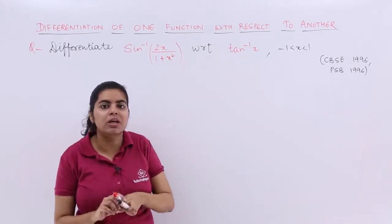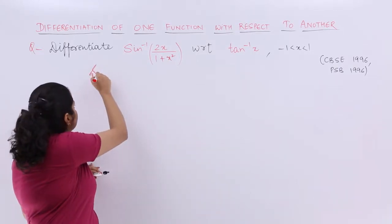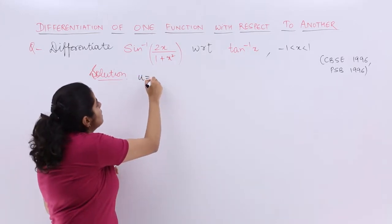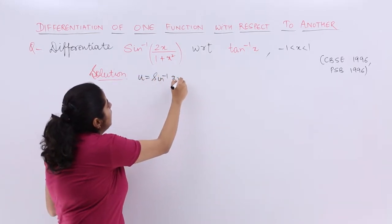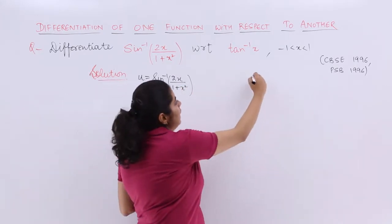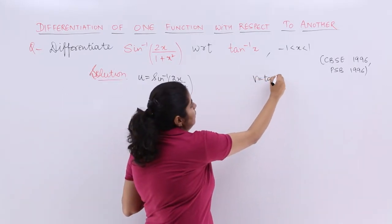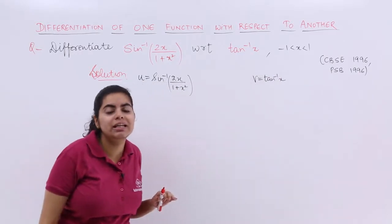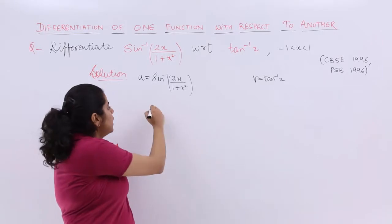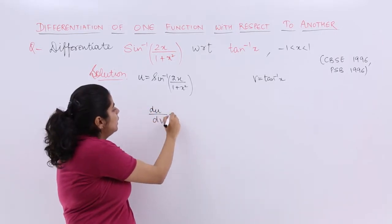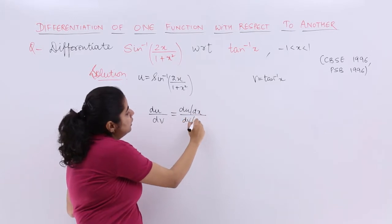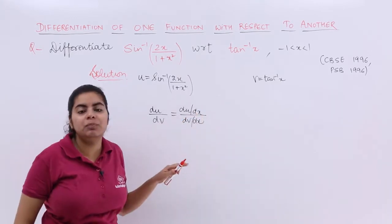Let's start the solution. So if my u is sin inverse 2x upon 1 plus x square and my v is tan inverse x, you have to basically find out du upon dv. For du upon dv, we have to find out du upon dx upon dv upon dx as we started in the previous video.